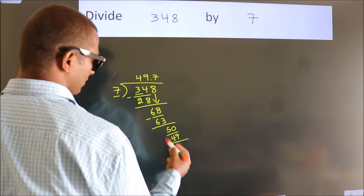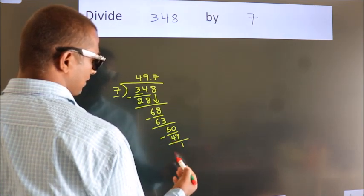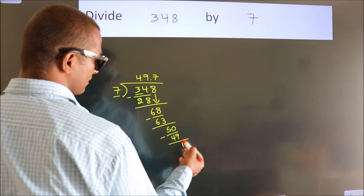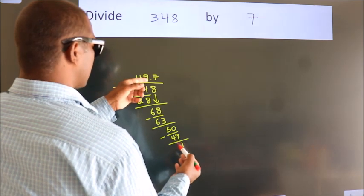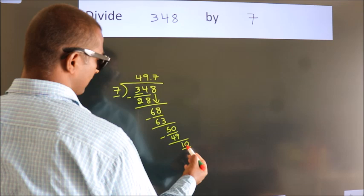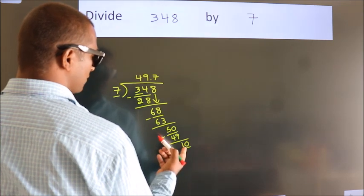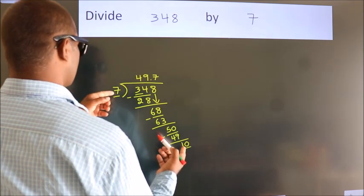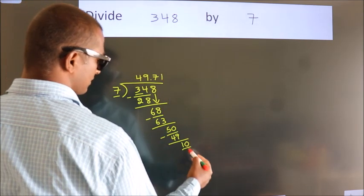Now we subtract. We get 1. After this, we already have the decimal. So directly take 0. So 10. A number close to 10 in the 7 table is 7 ones, 7.